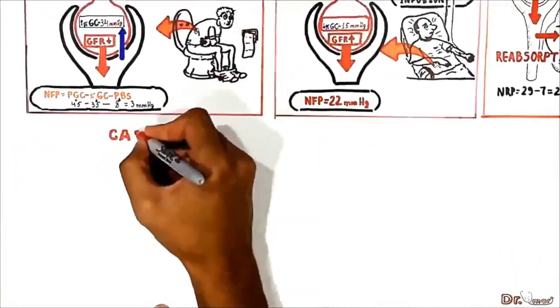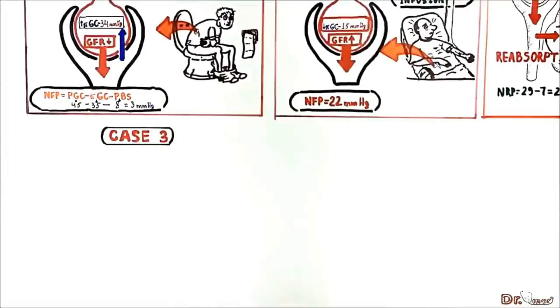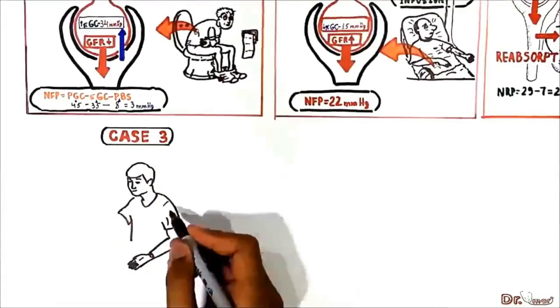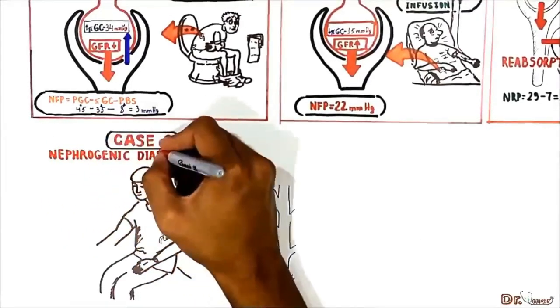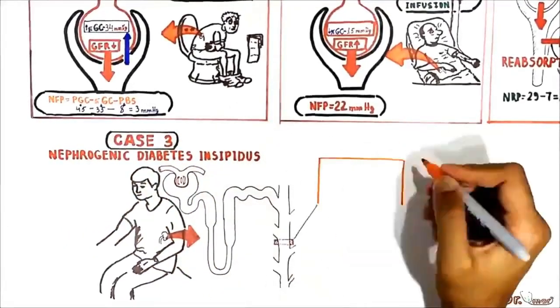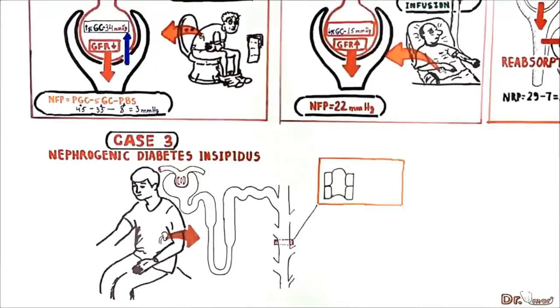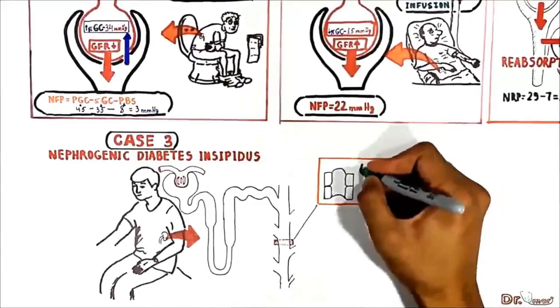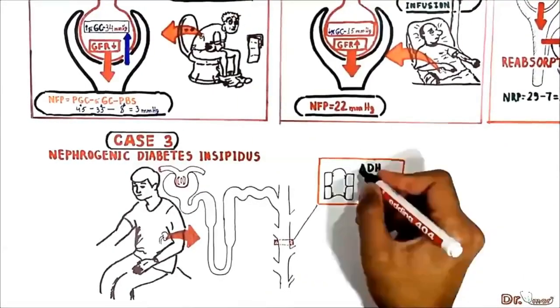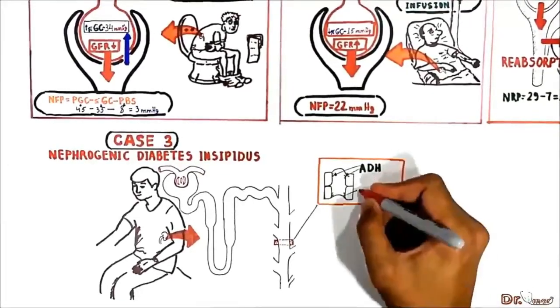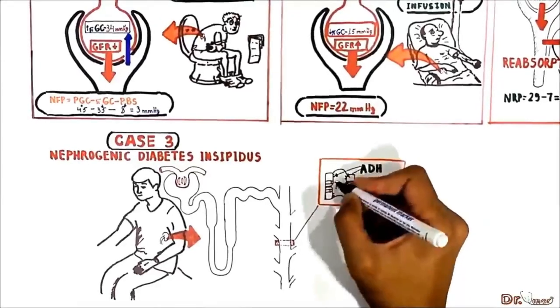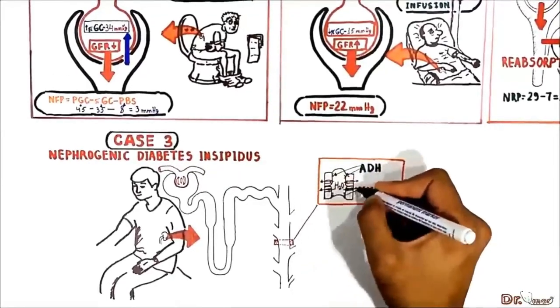In some cases we would have to increase oncotic pressure in order to increase water reabsorption. For example in case of nephrogenic diabetes insipidus. It is very important to know that under normal conditions, anti-diuretic hormone acts on anti-diuretic hormone receptors of cells collecting ducts and retains water by increasing reabsorption here.